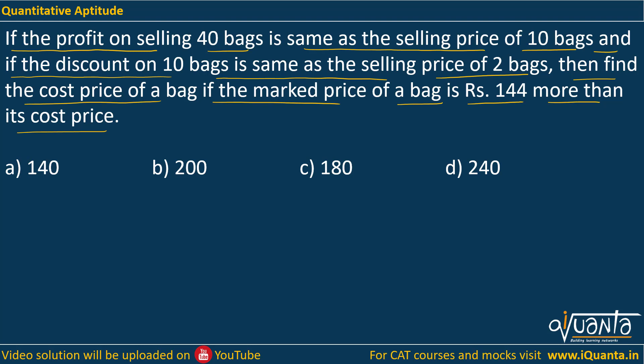Profit on selling 40 bags — profit is selling price minus cost price. Profit of 40 bags means we multiply by 40. This is equal to the selling price of 10 bags, so 10 SP.